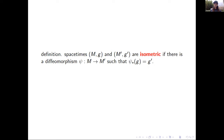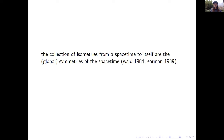We say that spacetimes (M, g) and (M', g') are isometric if there's a diffeomorphism from M to M' such that when you push forward g, you get g'. The collection of isometries from a spacetime to itself are the global symmetries of spacetime. This is what I mean by a global symmetry of spacetime — it's the one that Wald uses in his book and also the one that Earman uses when constructing the hierarchy of symmetries in classical spacetime structure.